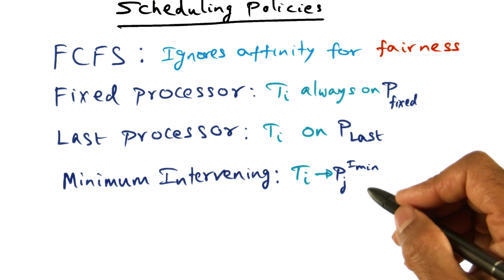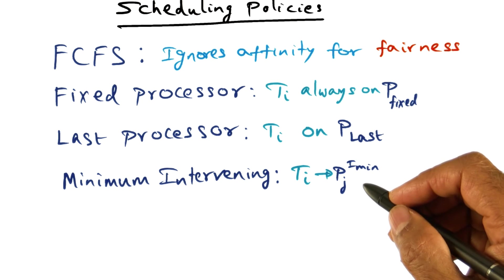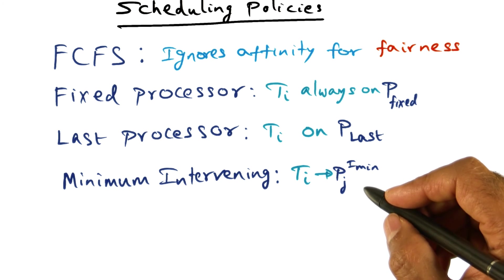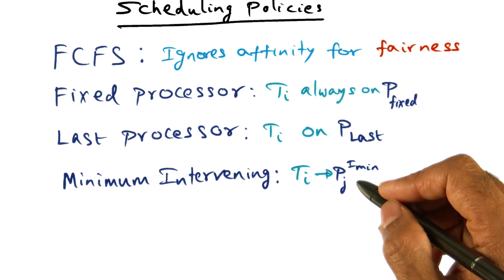The next couple of scheduling policies I'm going to tell you about require more sophistication in terms of the information that the scheduler needs to keep on behalf of every thread in order to make its scheduling decision.